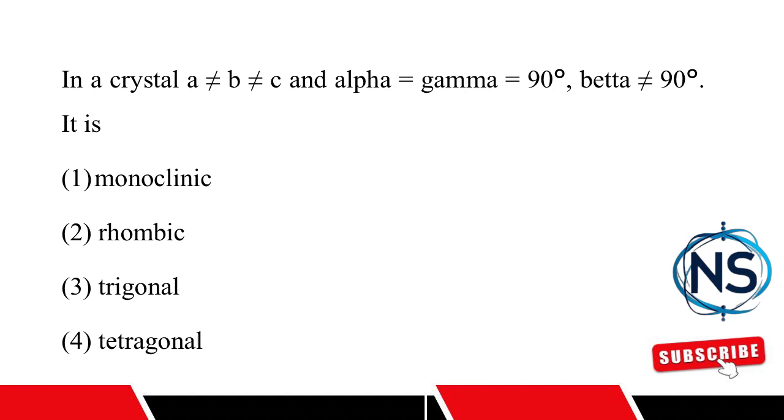In crystals, a equals b equals c, and alpha equals gamma equals 90 degrees, but beta does not equal 90 degrees. The crystal system is monoclinic.